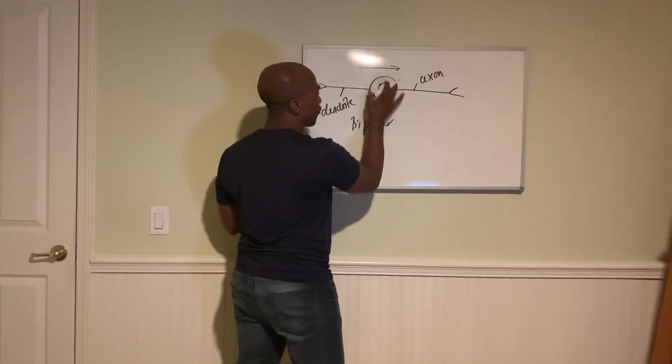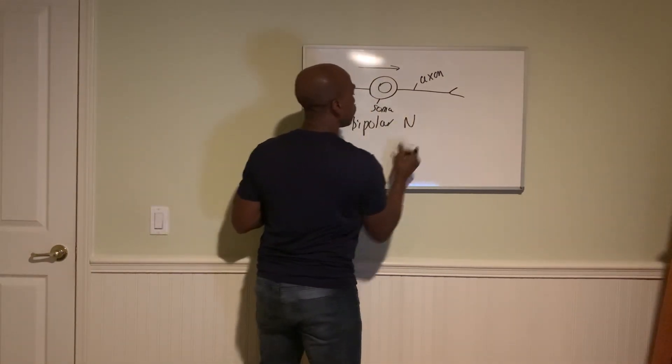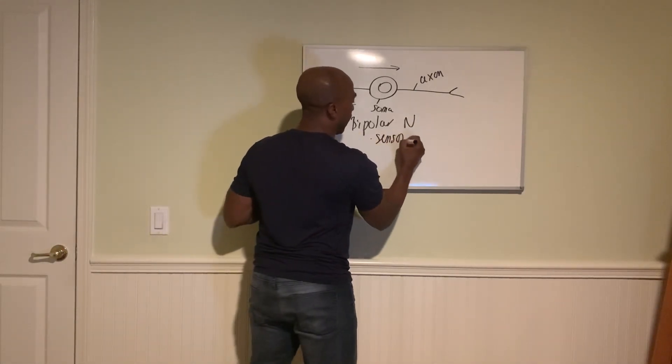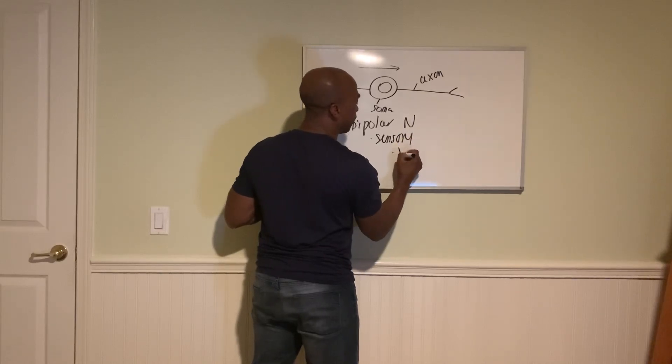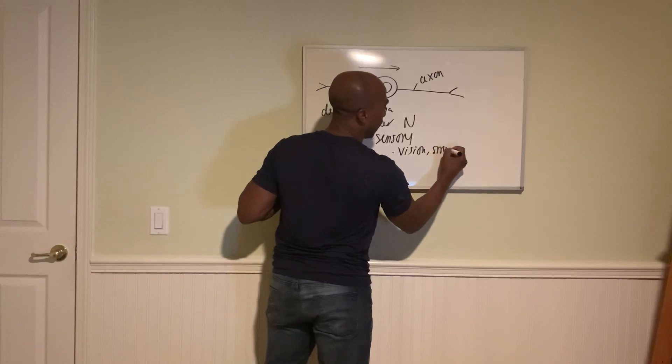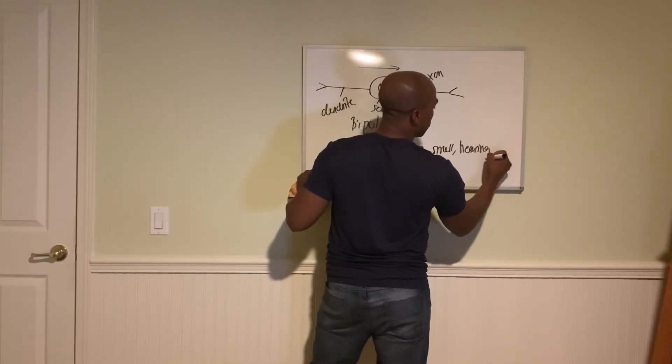These neurons are used for special senses, so they're sensory and they deal with things like vision, smell—I think even hearing will use these as well. So these are your typical first neurons in the visual, olfactory, and auditory pathways, your bipolar neurons.